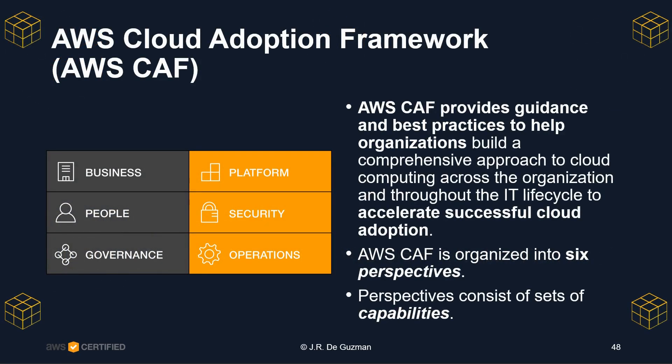Each organization's cloud adoption journey is unique. However, in order for any organization to successfully migrate its IT portfolio to the cloud, three elements must be in alignment: people, process, and technology. Business and technology leaders in an organization must understand the organization's current state, target state, and the transition needed to achieve the target state.